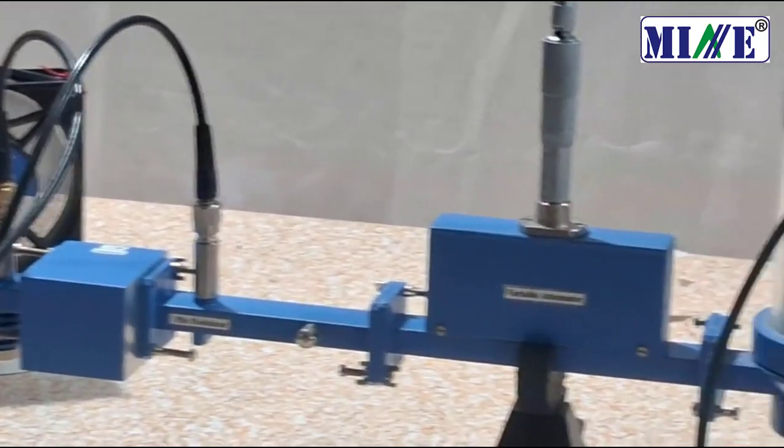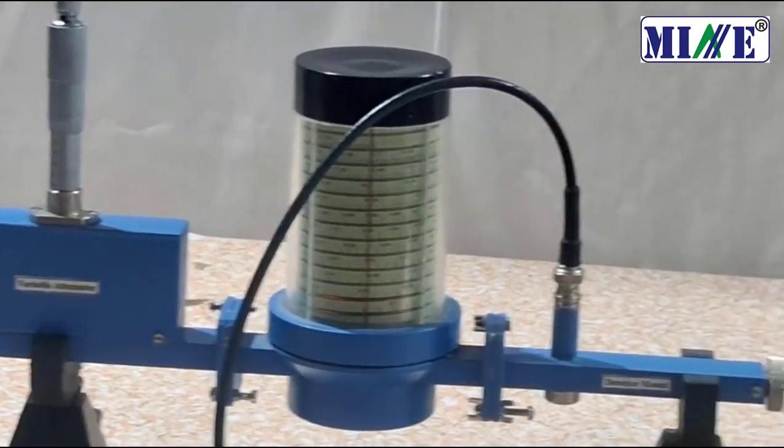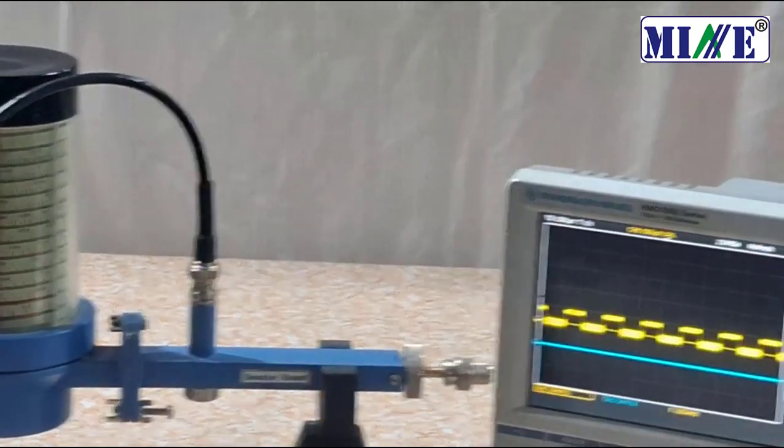Set the variable attenuator at zero attenuation. Set the analog DRF meter at zero position.